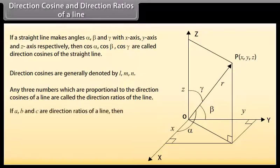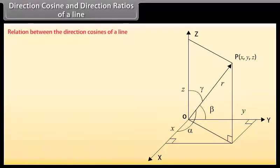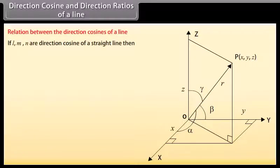If A, B and C are Direction Ratios of a Line, then A equals Lambda L, B equals Lambda M, C equals Lambda N. Relation between the Direction Cosines of a Line: if L, M, N are Direction Cosines of a Straight Line, then L squared plus M squared plus N squared equals 1.